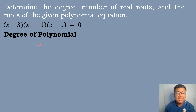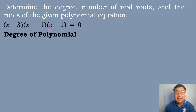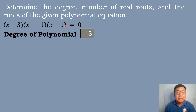We need to determine first the degree of polynomial. In determining the degree of polynomial, we inspect the equation by multiplying all the variables. We have x times x equals x squared, and x squared times x equals x to the third power. So the degree of polynomial is the value of the exponent, which is 3.